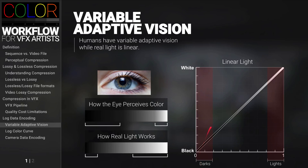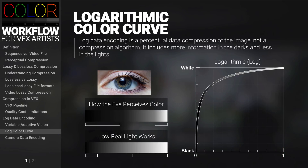So if we were to rewrite this color curve in a way that would better simulate human vision, what would that look like? This is where the logarithmic color curve comes in. If you take a look at the space on this color curve that occupies the dark areas versus the light areas, you'll see that this part of the curve has a lot more information and the lights have a lot less information, which better simulates how the eye perceives light.